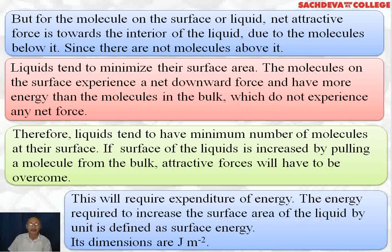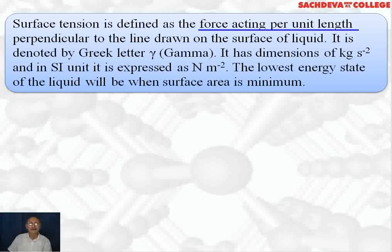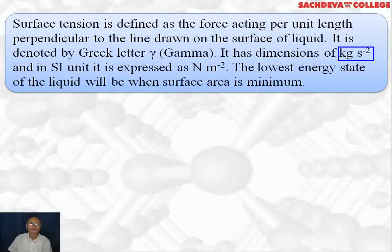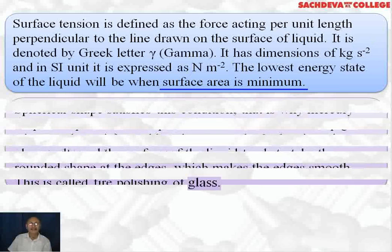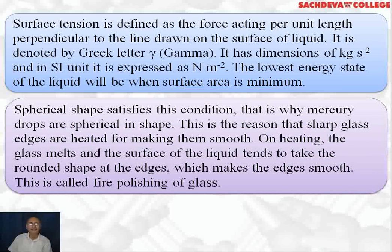The energy required to increase the surface area of the liquid by unity is defined as surface energy, with units of joules per meter squared (J/m²). Surface tension is defined as the force acting per unit length perpendicular to a line drawn on the surface of the liquid. It is denoted by gamma (γ), with SI unit of newton per meter (N/m). The lowest energy state of a liquid occurs when surface area is minimum — a spherical shape — which is why mercury drops are spherical due to surface tension.